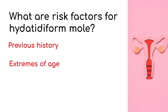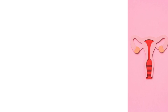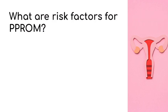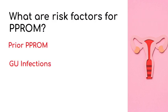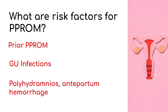What are risk factors for PPROM? Prior PPROM, genitourinary infections, polyhydramnios, and antepartum hemorrhage. If you know these risk factors, you'll understand why a pregnant woman with asymptomatic bacteriuria must be treated with antibiotics regardless, because it can increase the risk of PPROM.